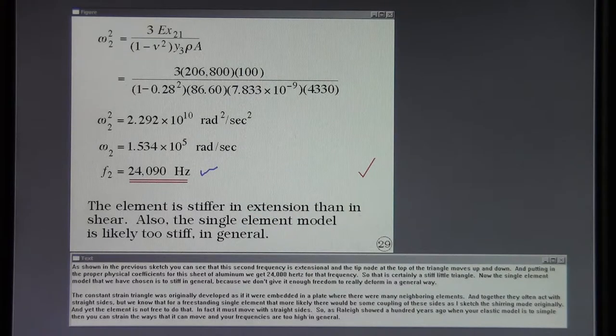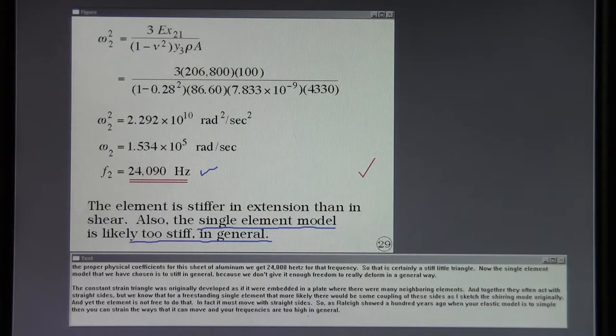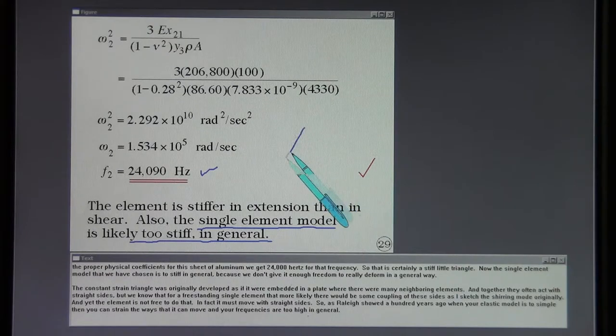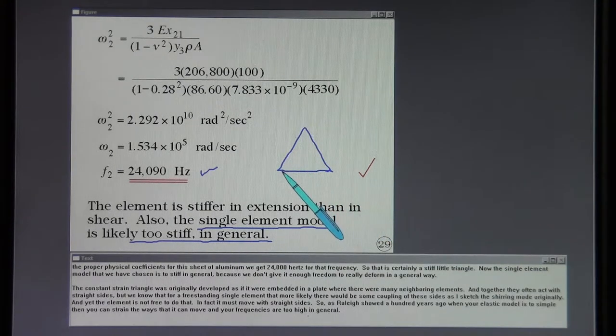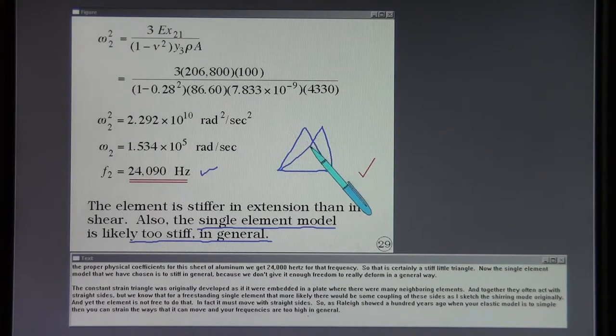The single element model that we have chosen is too stiff in general because we don't give it enough freedom to really deform in a general way. The constant strain triangle was originally developed as if it were embedded in a plate where there were many neighboring elements. Together they often act with straight sides. But we know that for a free-standing single element, more likely there would be some cupping of these sides as I sketched the shearing mode originally. Yet the element is not free to do that. In fact, must move with straight sides. So as Rayleigh showed a hundred years ago, when your elastic model is too simple, then you constrain the ways that it can move and your frequencies are too high in general.